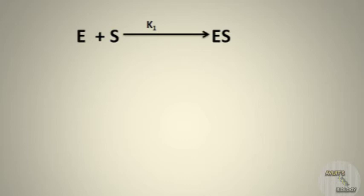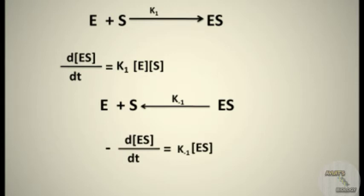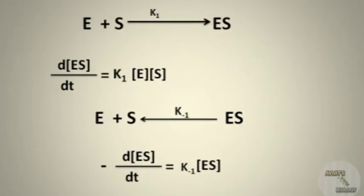For the backward reaction where the enzyme and substrate are formed from the enzyme-substrate complex, the rate equation uses k minus 1 as the rate constant. The minus sign is due to the direction of the reaction. Note that [E], [S], and [ES] in brackets stand for their concentrations: [E] is the concentration of the enzyme, [S] is the concentration of the substrate, and [ES] is the concentration of the enzyme-substrate complex.